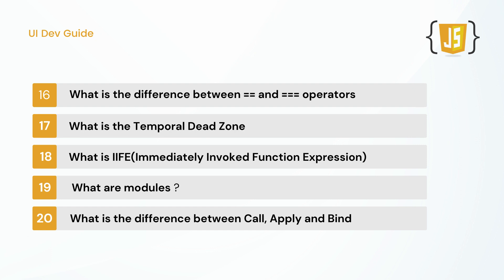The next question is immediately invoked function expressions (IIFE). What is the use of it, and when do we use it? A variable inside an IIFE is not accessible outside. An interesting question is: suppose you have a variable a equal to 10 inside an IIFE and you want to update that value to 15 even after the IIFE runs — how can you do that? The answer involves using a closure. This shows whether you are thinking in the correct way. You can create an example and paste it in the comments.